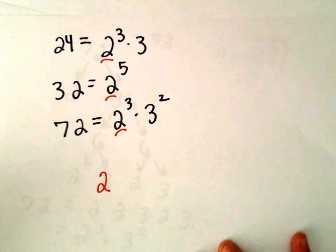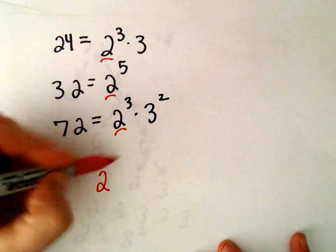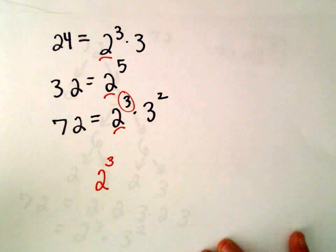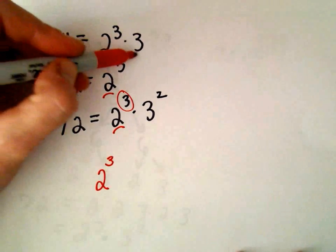That means we can factor a 2 out of each one of these numbers. But we could actually factor it out to the third power. We take the smallest exponent.